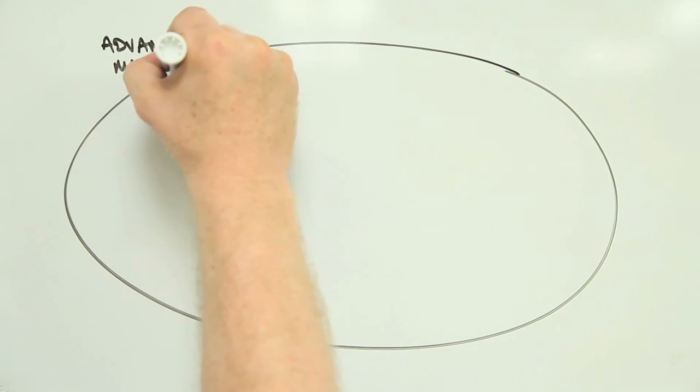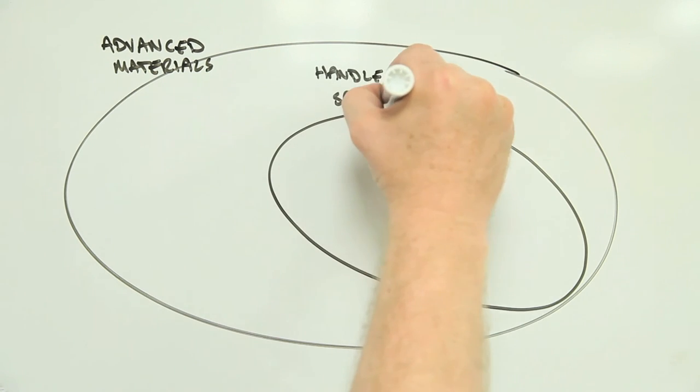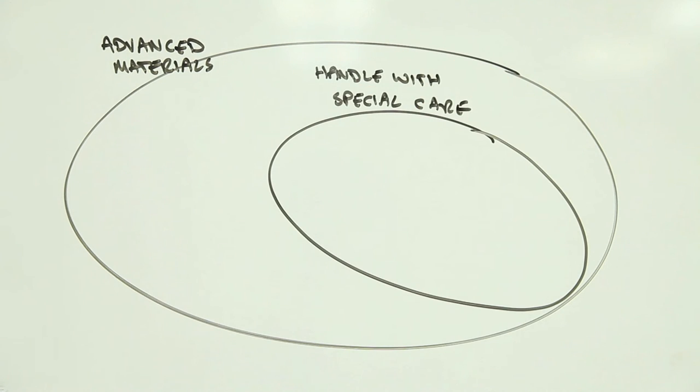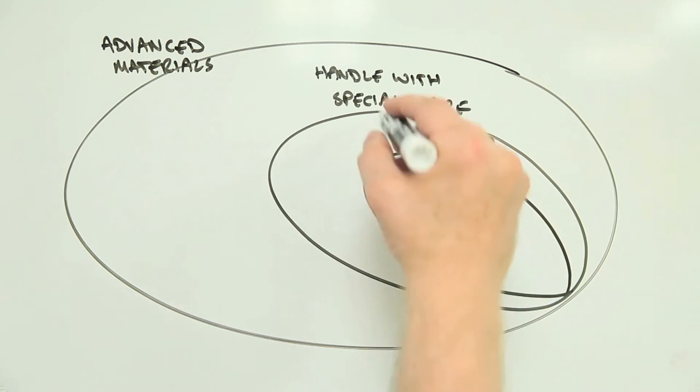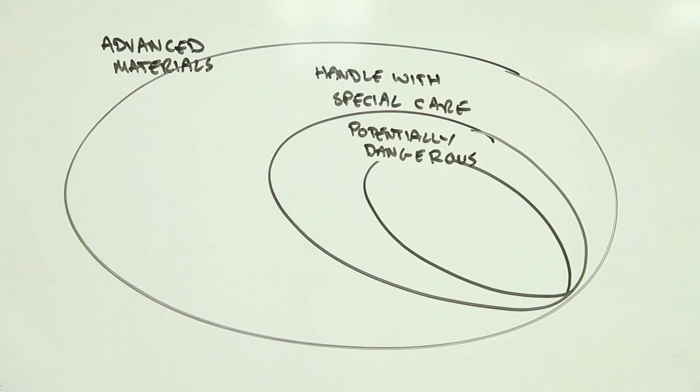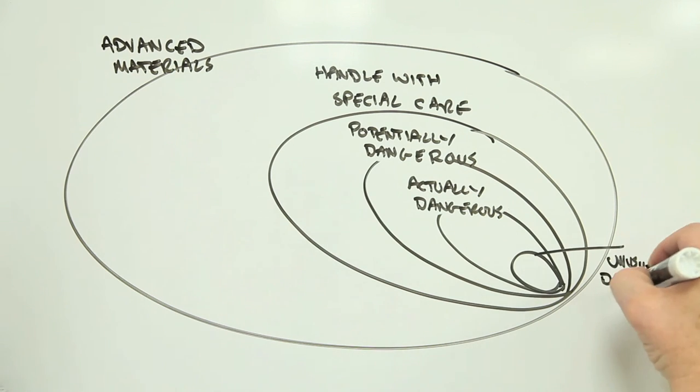In other words, out of the vast array of advanced materials we could be using, some may need to be handled with special care. But only a small number of these materials will have the potential to get into our bodies and cause harm. Of these, only some will overcome or slip by the body's defenses and cause serious harm. And of these, fewer still will cause harm in ways we weren't expecting. And a very small number of materials indeed will lead to new diseases.